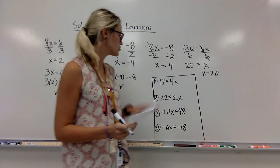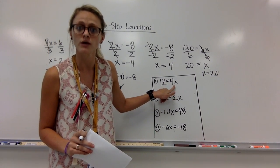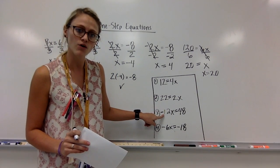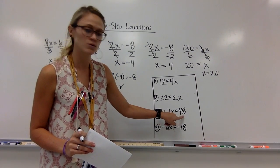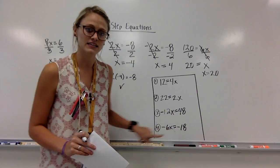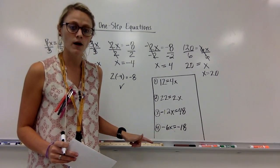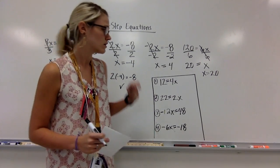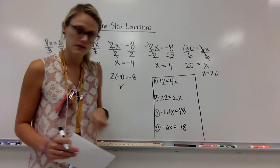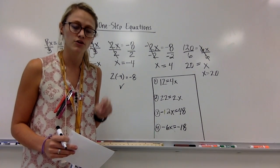I've got four practice ones I want you to do. Number one: 12 equals 4x. Number two: 22 equals 2x. Number three: negative 12x equals 48. Number four: negative 6x equals negative 18. Be careful with your negatives for the third and fourth ones. Do these on your whiteboards. Pause the video, get these done, press play, and you can check your answers.